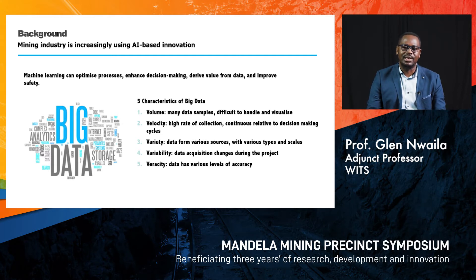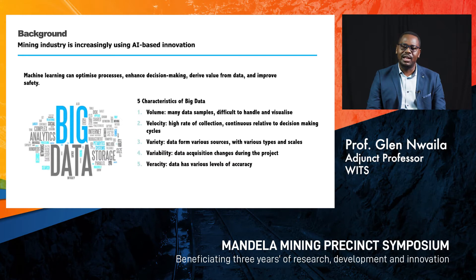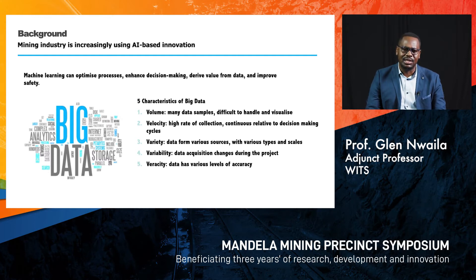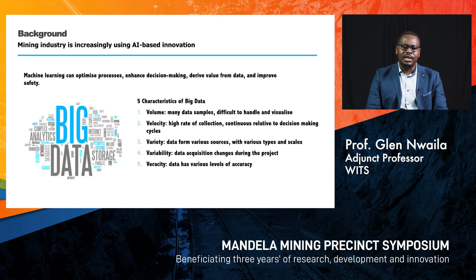Data collection is continuous compared to other industries where they collect data once in a while. The third V is variety — data coming from different sources such as the survey department, mining, and geosciences. There is also high variability, meaning the acquisition changes during the project timeline and the mining life cycle. And the last one is veracity, where the data itself has various levels of accuracy — some in qualitative formats such as geological observations, and some in quantitative formats such as chemical assays and geophysical data.